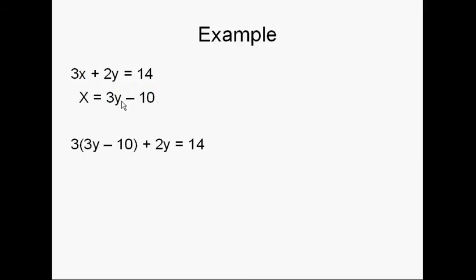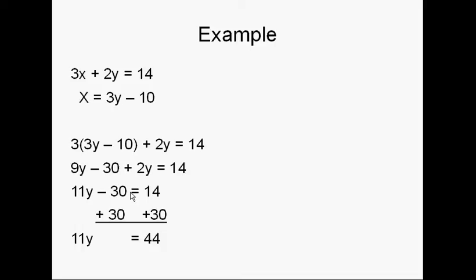So once I put 3y minus 10 in for the x, here's what I get: 3 times (3y minus 10) plus 2y equals 14. Continue to work it out. That becomes 9y minus 30 plus 2y equals 14. Combine my like terms. 11y minus 30 equals 14. I add 30 to both sides and I get 11y equals 44. And then I divide both sides by 11 and I get y equals 4.